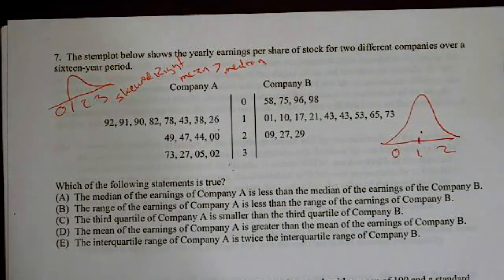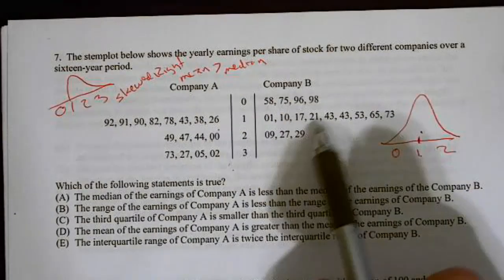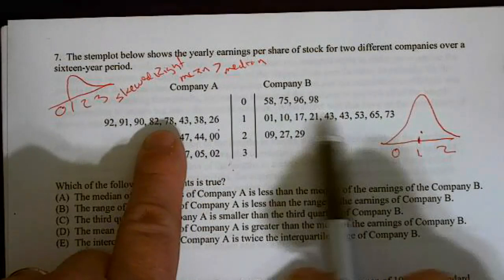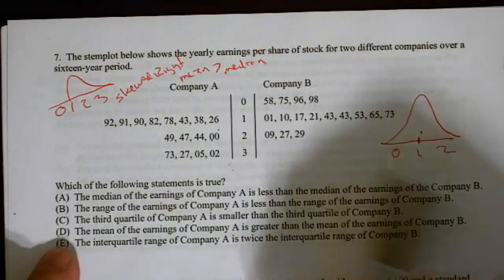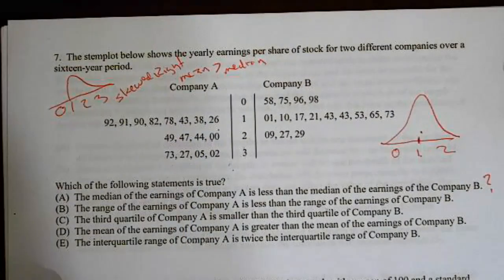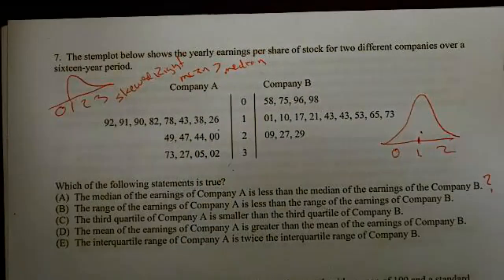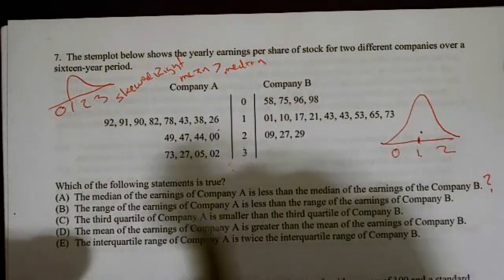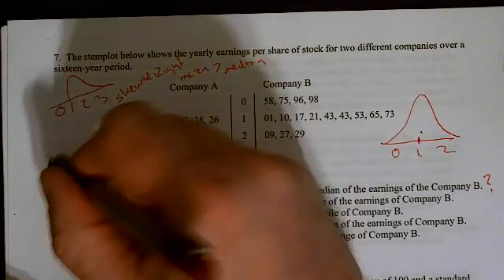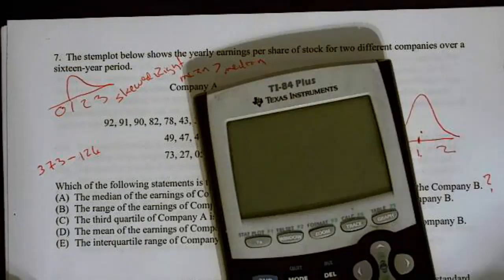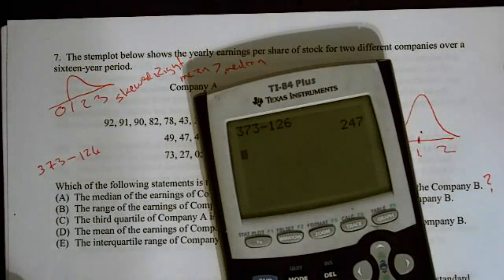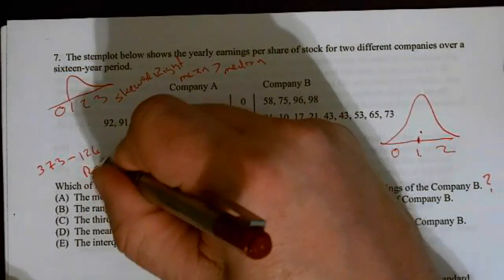When I look at this, the median of company A is less than the median of company B. And I'm like, you know what, without doing any work, this median is going to be here, this median may be here but probably a little bit above. So I don't think that's the answer. The range of the earnings of company A is less than the range of company B. Well, the range is the largest minus smallest. In this case, we'd be looking at 373 minus 126. So let's check that out. 373 minus 126, we end up getting a range of about 247. So our R over here is about 247. When I come over here, my largest value is 229 and my smallest value is 58.